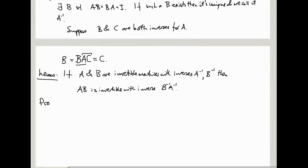So proof: AB times B inverse A inverse is, well, remember matrix multiplication is associative, that means we can wiggle the brackets around however we want and we can completely ignore the brackets. This is just A, B, B inverse, A inverse. The B inverse and the B cancel, and the A inverse and the A cancel and give us the identity. So you can see that this product here, B inverse A inverse, is an inverse for AB.